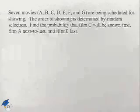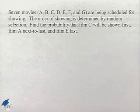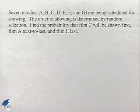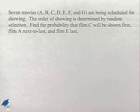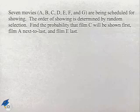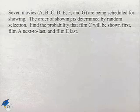Now let's look at a problem dealing with choosing movies. Seven movies, A, B, C, D, E, F, and G, are being scheduled for showing. The order of showing is determined by random selection. Find the probability that film C will be shown first, film A next to last, and film E last.